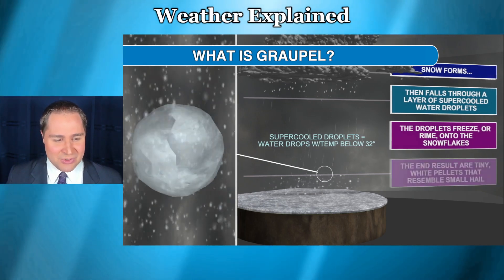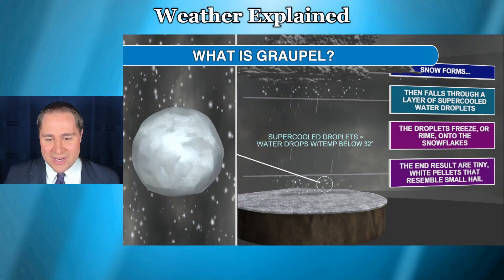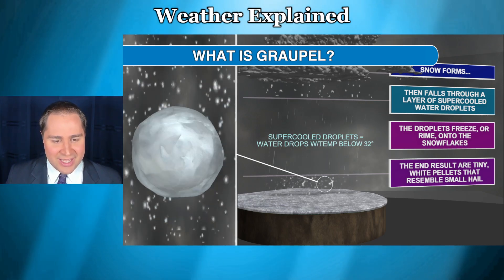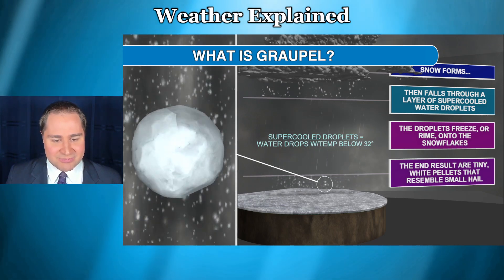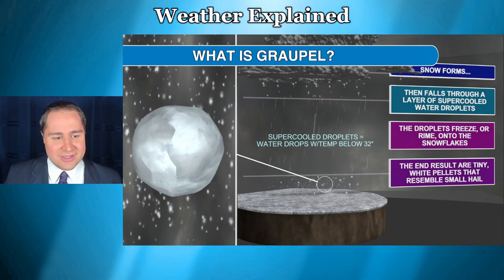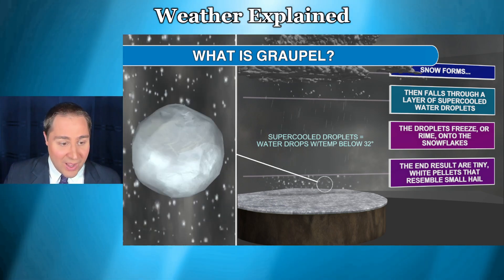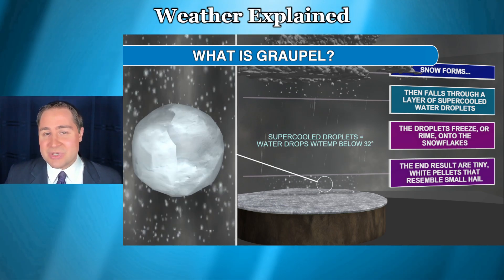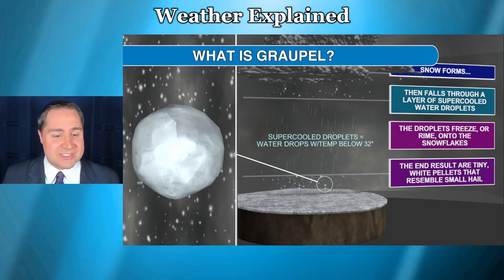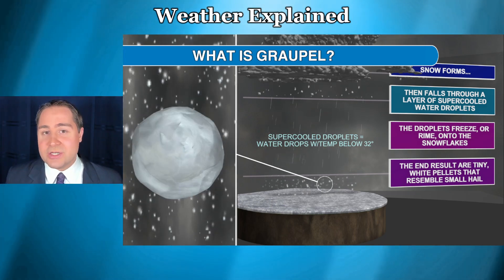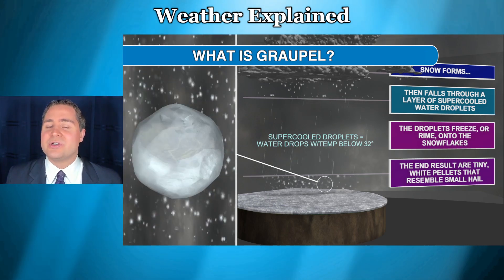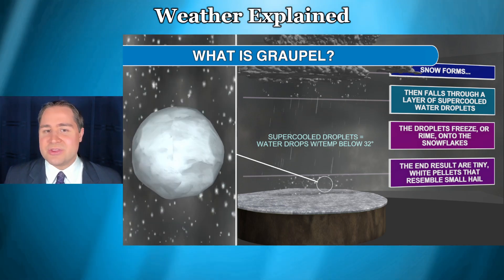The end result are these tiny white pellets that, when they're laying on the ground, actually look like pea-sized hail, because these tiny little white pellets are about the size of a pea. And they're white, laying on the ground, so it looks like pea-sized hail. But graupel is not hail, because hail actually starts out as raindrops rather than snowflakes. And hail also only occurs in thunderstorms.